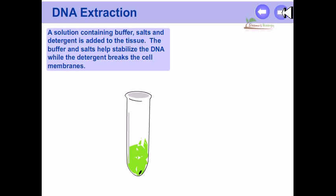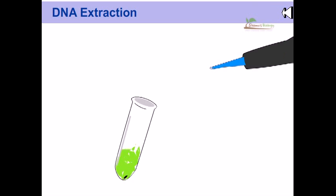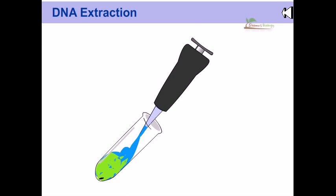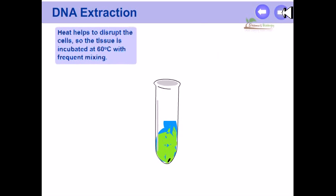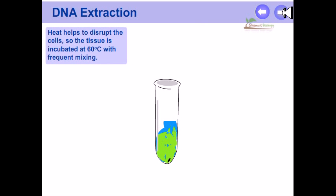A solution containing buffer, salts, and detergent is added to the tissue. The buffer and salt help stabilize the DNA while the detergent breaks the cell membrane. Heat helps to disrupt the cells, so the tissue is incubated at 60 degrees Celsius with frequent mixing.